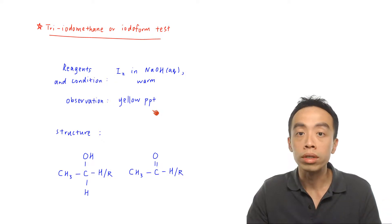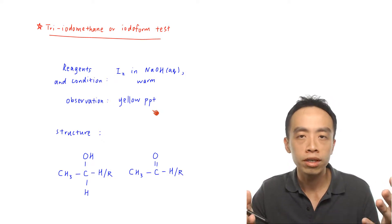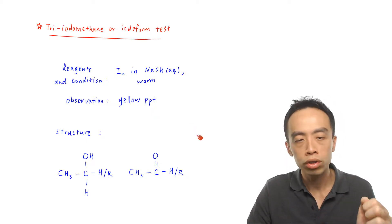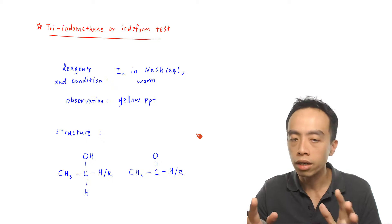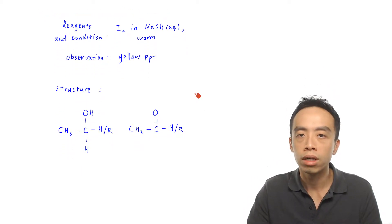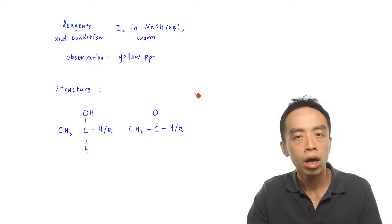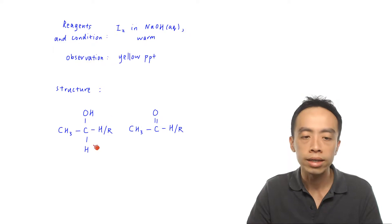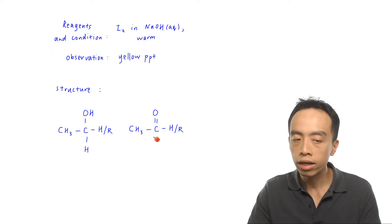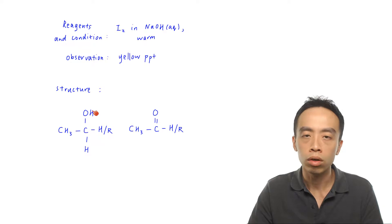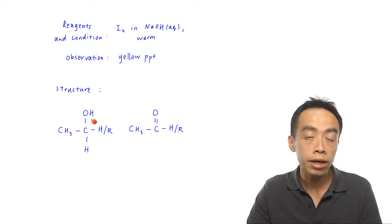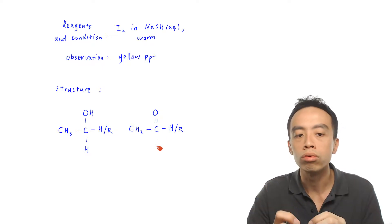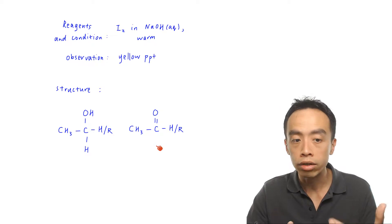The next thing we want to discuss is what structure will give me a positive triiodomethane test or a positive iodoform test. The structure is very specific. The two structures that will give me a positive triiodomethane test — a yellow precipitate with iodine in NaOH aqueous warm — are these two: the first on the left has an OH group, an alcohol functional group; the second on the right is a carbonyl compound. Let's scrutinize each in greater detail.